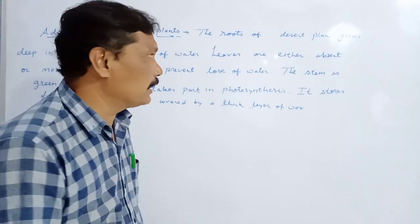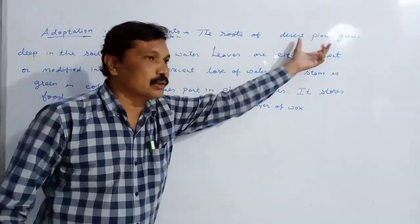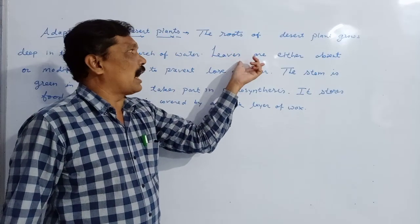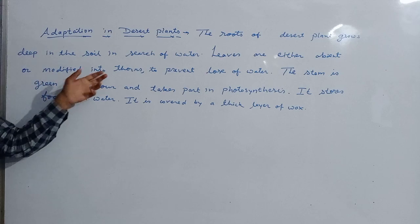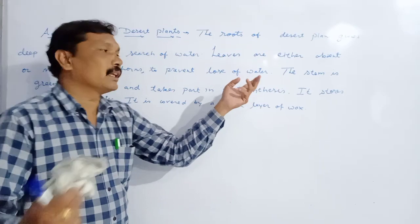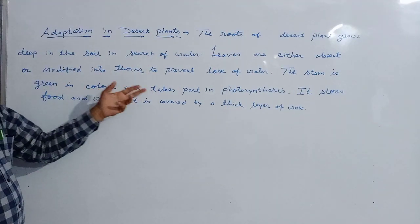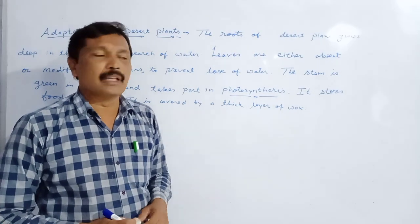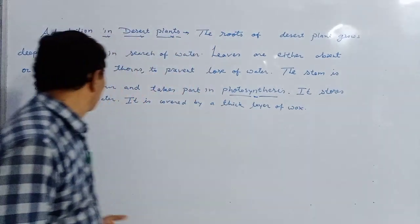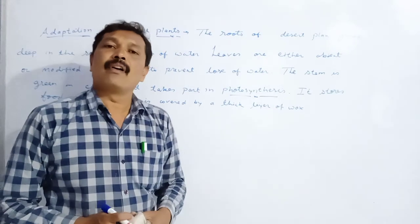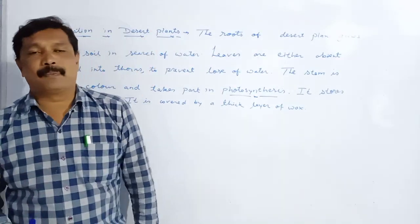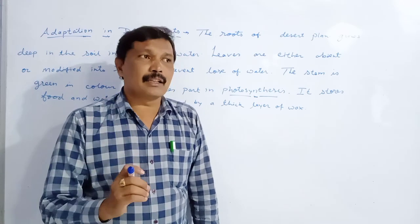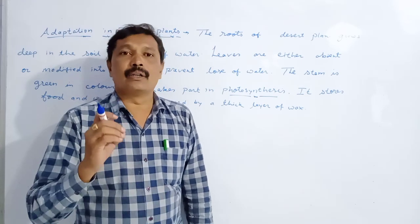What is adaptation in desert plants? The first adaptation: the root of the desert plant grows deep in the soil in search of water. Second: leaves are either absent or modified into thorns to prevent the loss of water. Third: the stem is green in color and takes part in photosynthesis — the process by which the plant prepares its own food. It stores food and water. It is covered by a thick layer of wax. From the study of adaptation, we learn that living organisms adjust to their surroundings in order to survive.